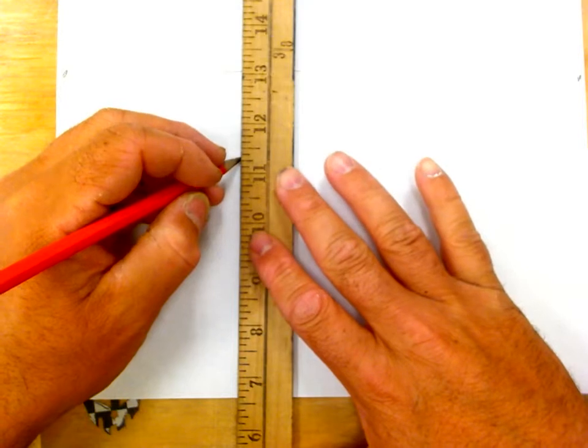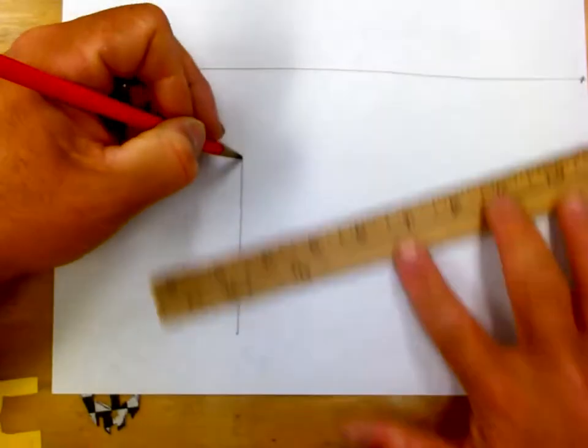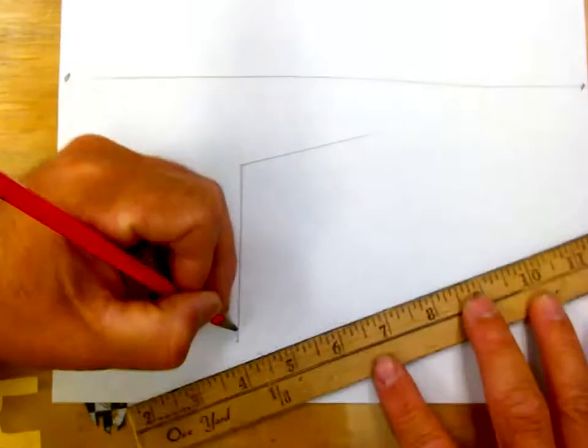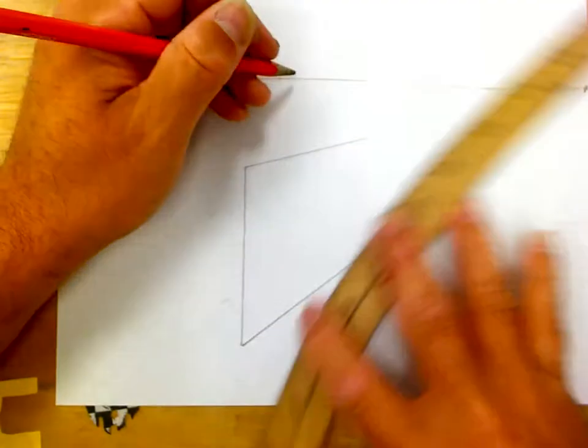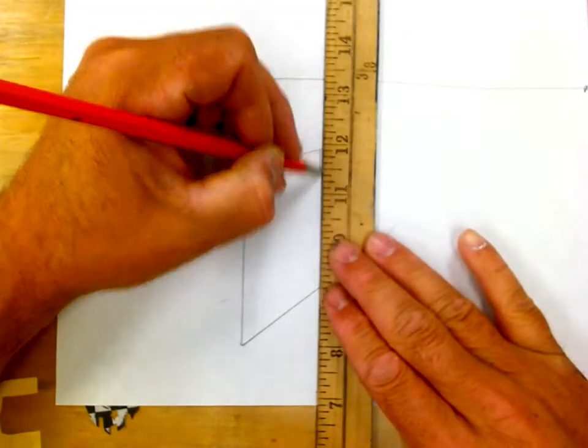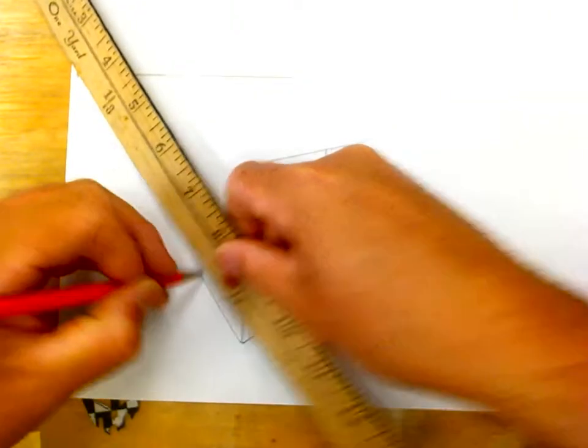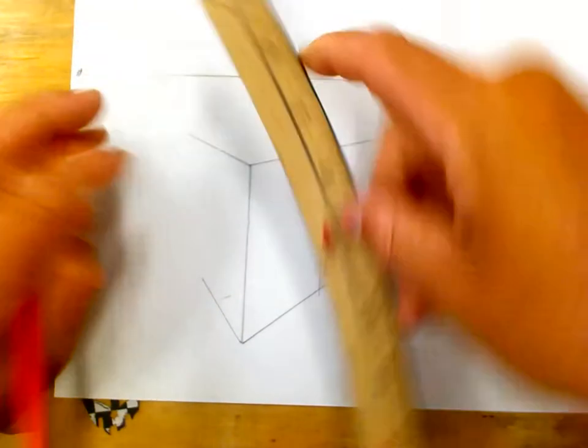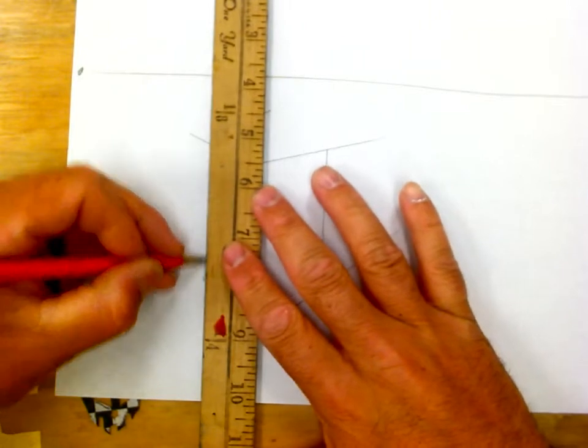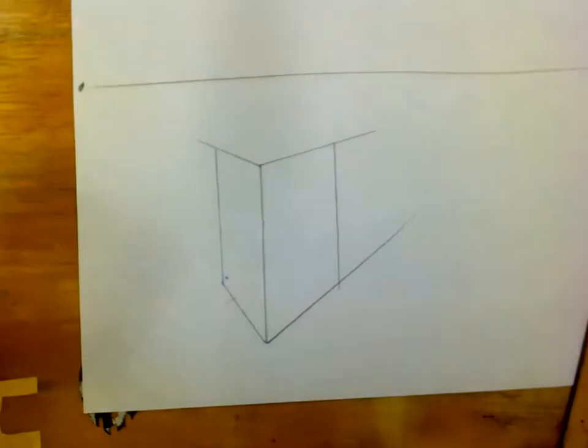Boom, there you go. Now, vertical line. And yes, I'm skipping some steps. Now, you're going to have to freehand the R because it's a curve.